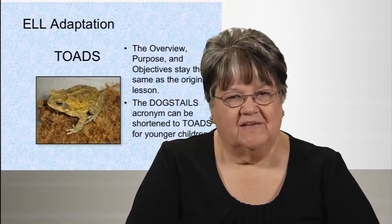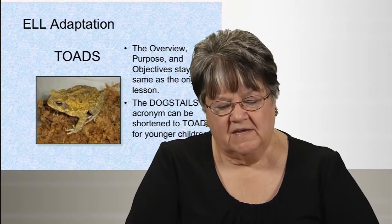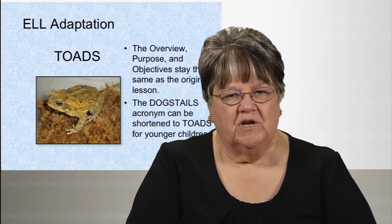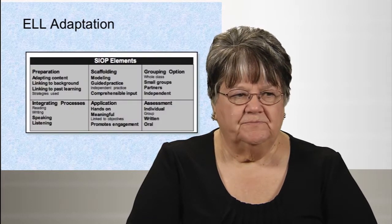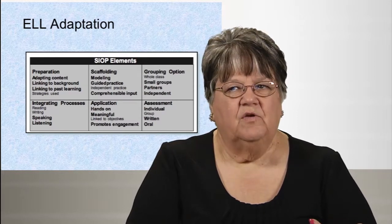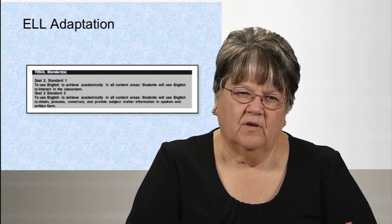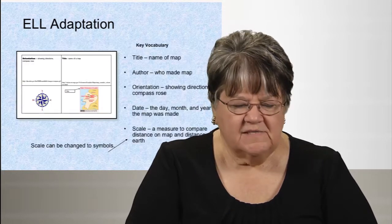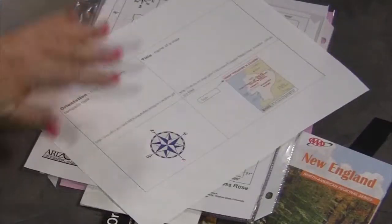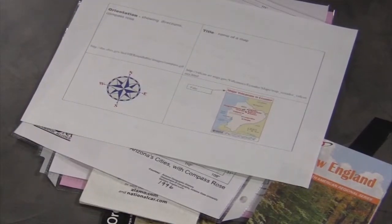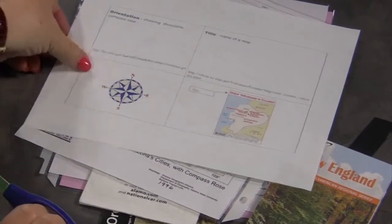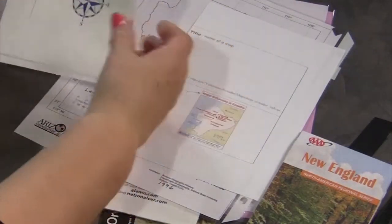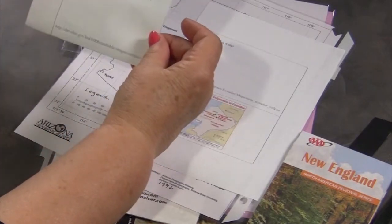This lesson also has an ELL adaptation using the acronym TOADS for younger children. The purpose, overview, and objectives are all the same, but the acronym is shortened. The SIOP elements are delineated and bolded, with TESOL standards and ELL reading and writing standards included. The ELL version comes with vocabulary cards — you print them off, students cut them in half, fold them into flash cards. For example, 'orientation shows direction or the compass rose,' with a picture to help them learn what the words mean.